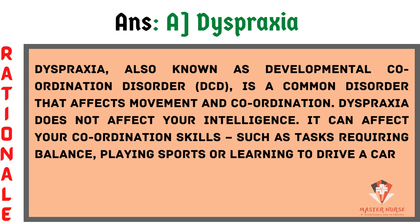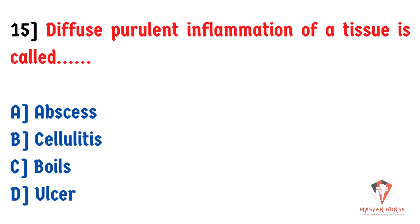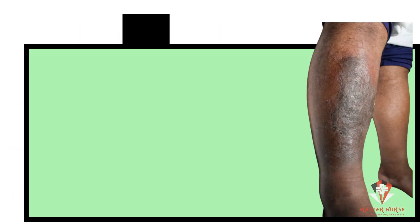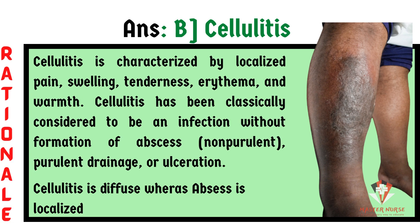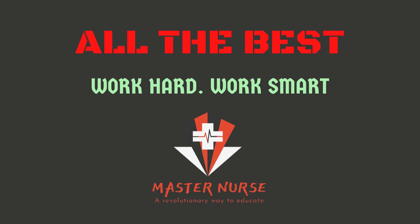Diffuse purulent inflammation of a tissue is called: A) Abscess, B) Cellulitis, C) Boils, D) Ulcer. The answer is B, cellulitis. Cellulitis is characterized by localized pain, swelling, tenderness, erythema, and warmth. Unlike an abscess, cellulitis does not form pus and can diffuse and spread, whereas an abscess is localized. A boil is superficial with some pus, and an ulcer represents tissue damage.